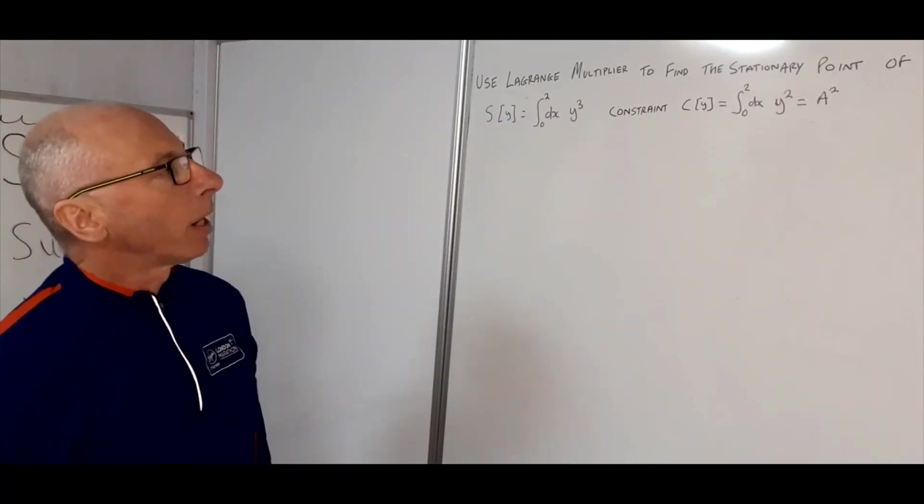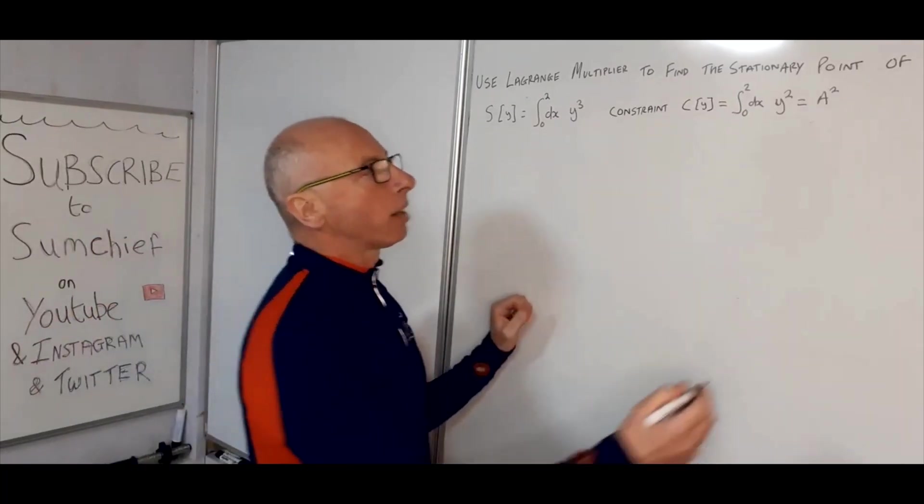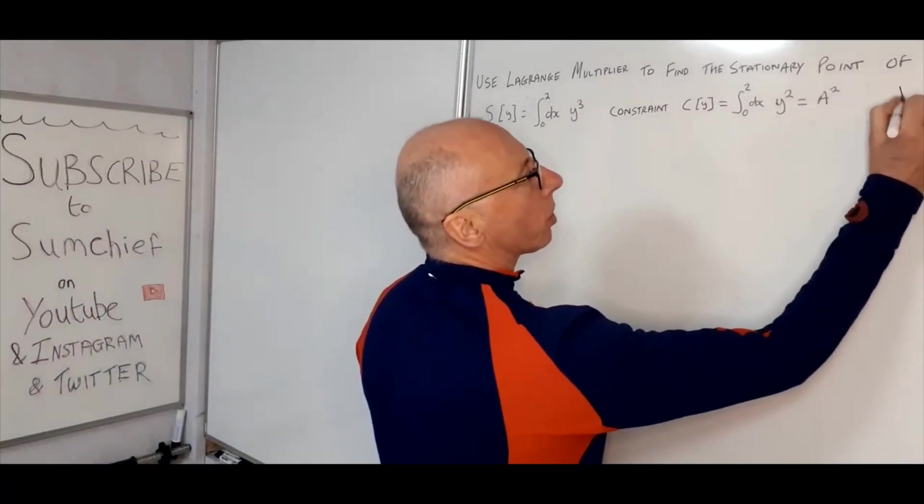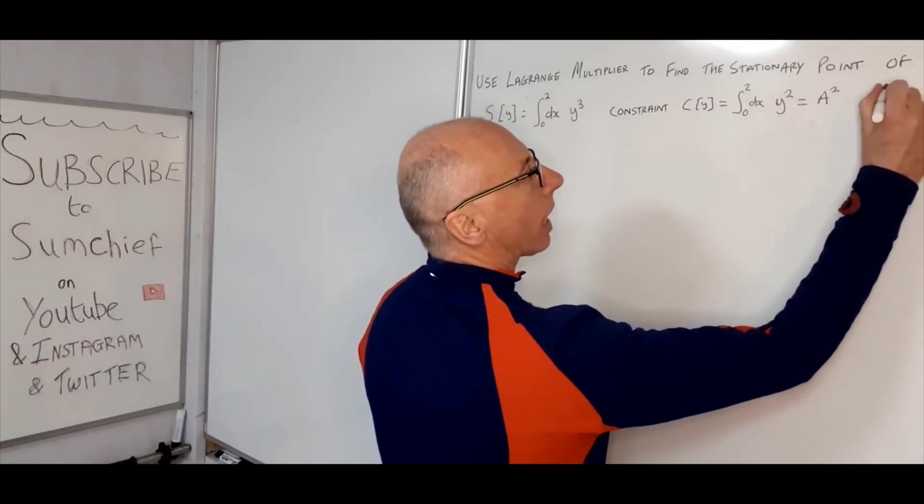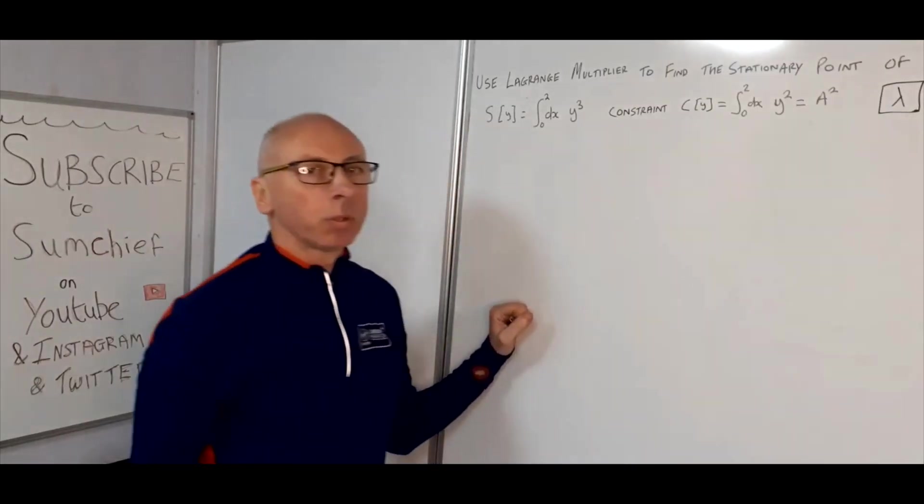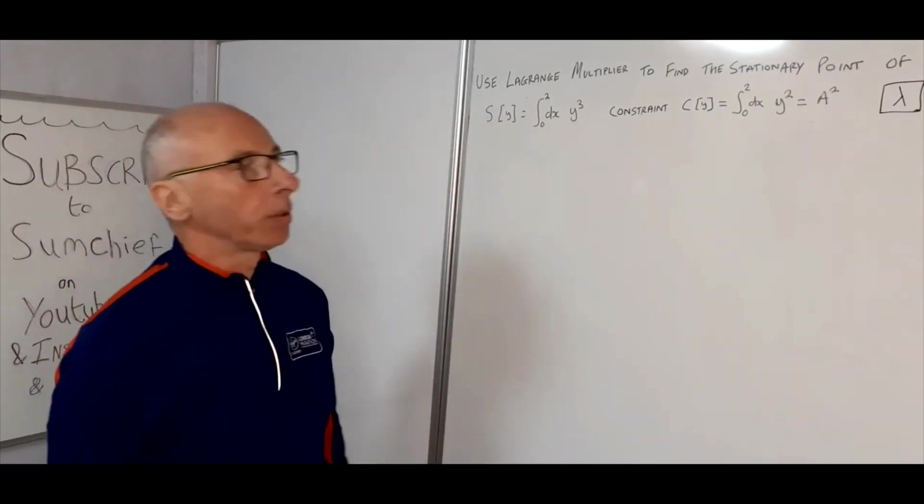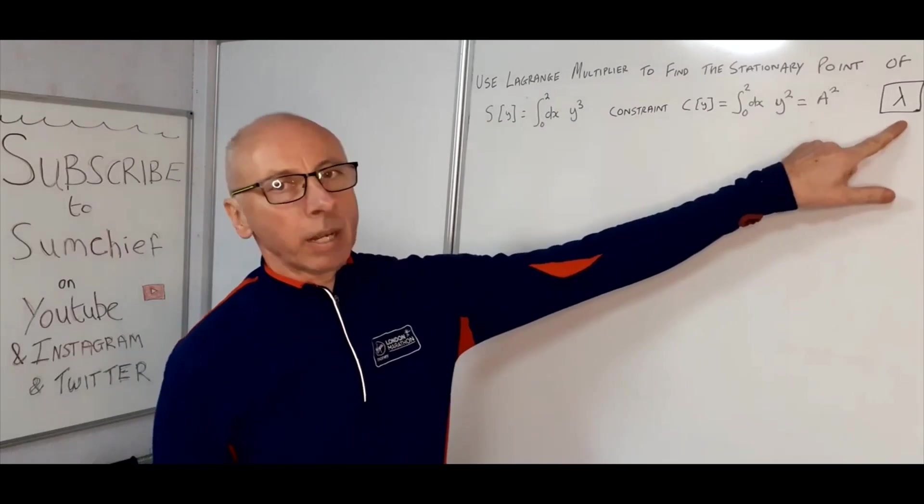And the method we're going to use is the Lagrange multiplier method. Now, the Lagrange multiplier is just a scalar multiple which is given as lambda. So that's the important part of what we're trying to do here, we're just trying to evaluate our lambda.